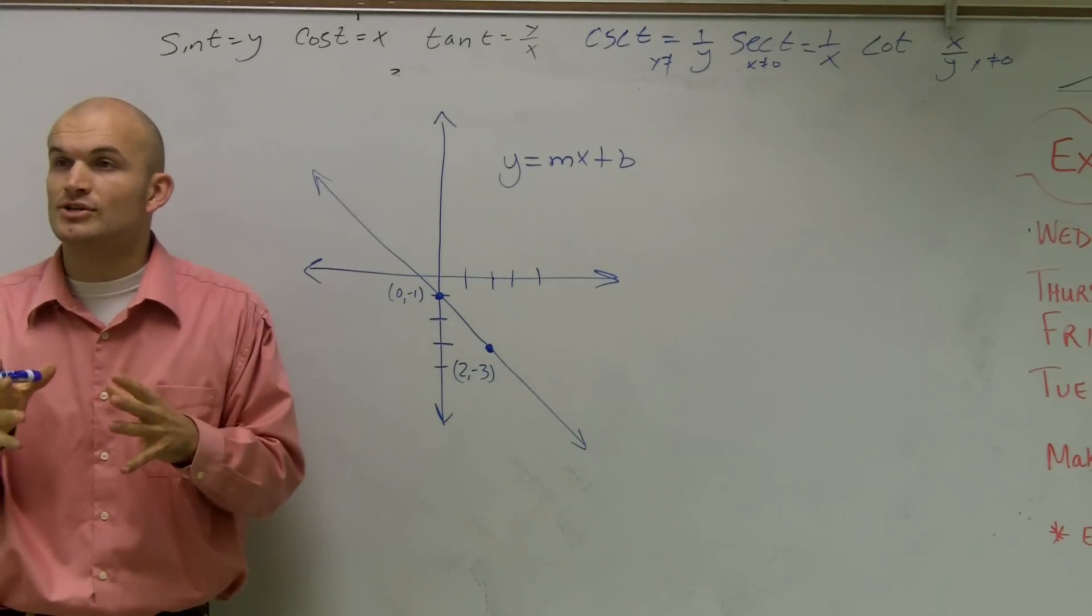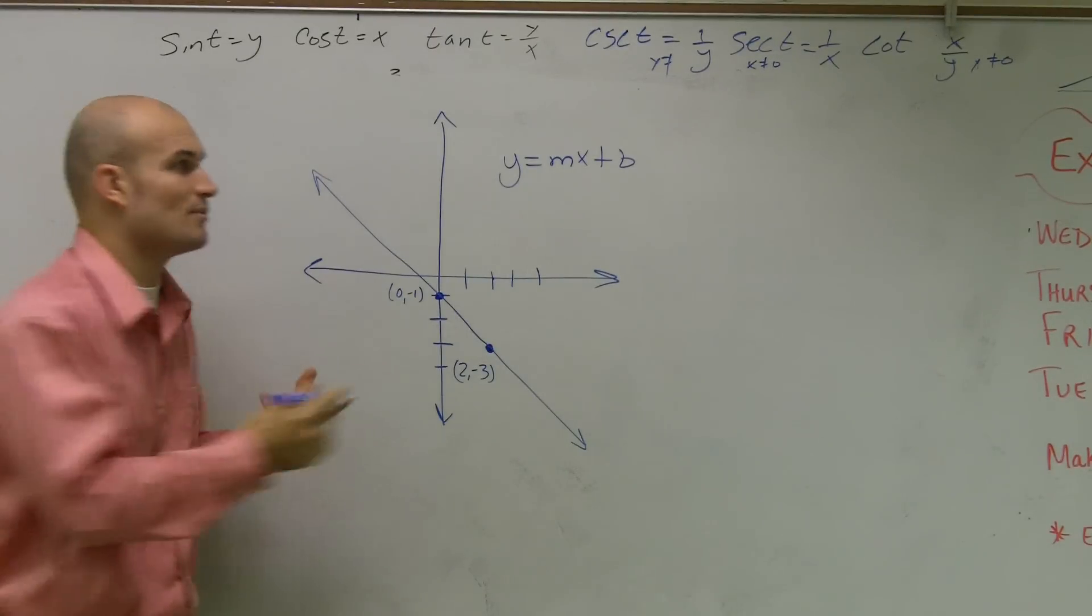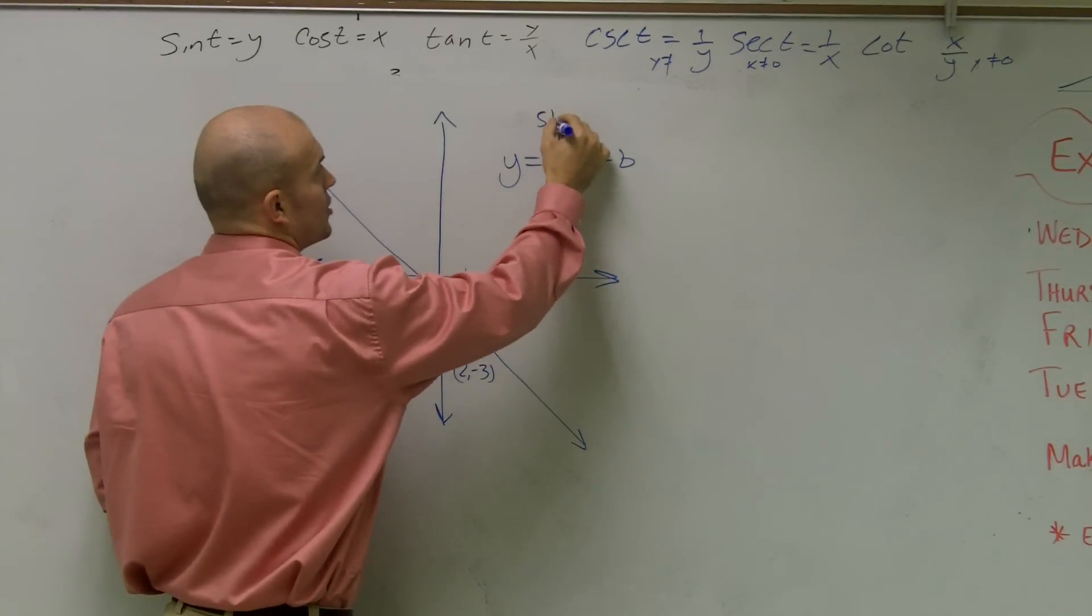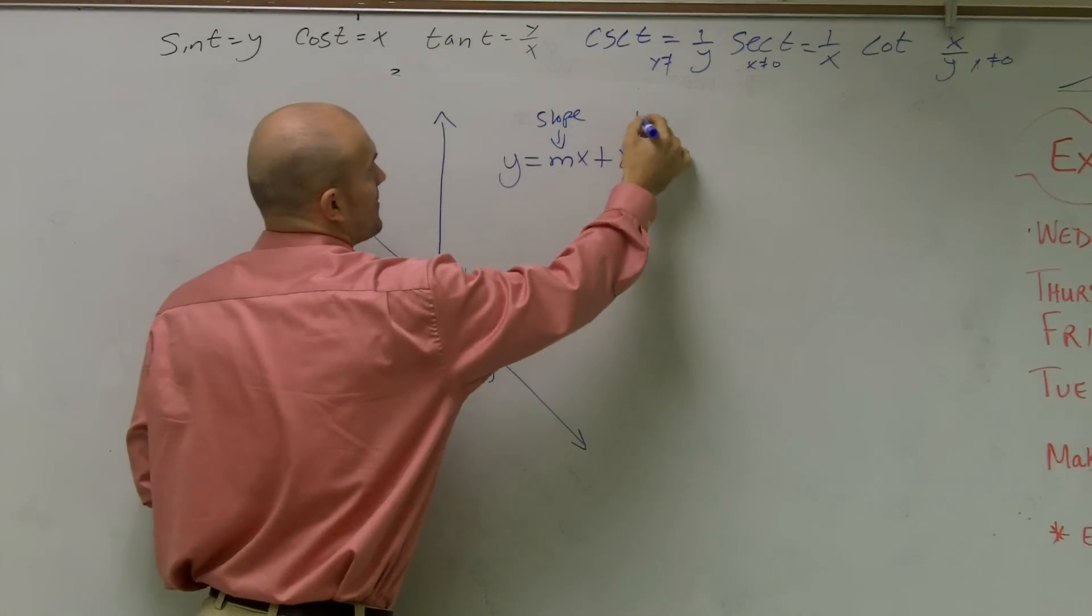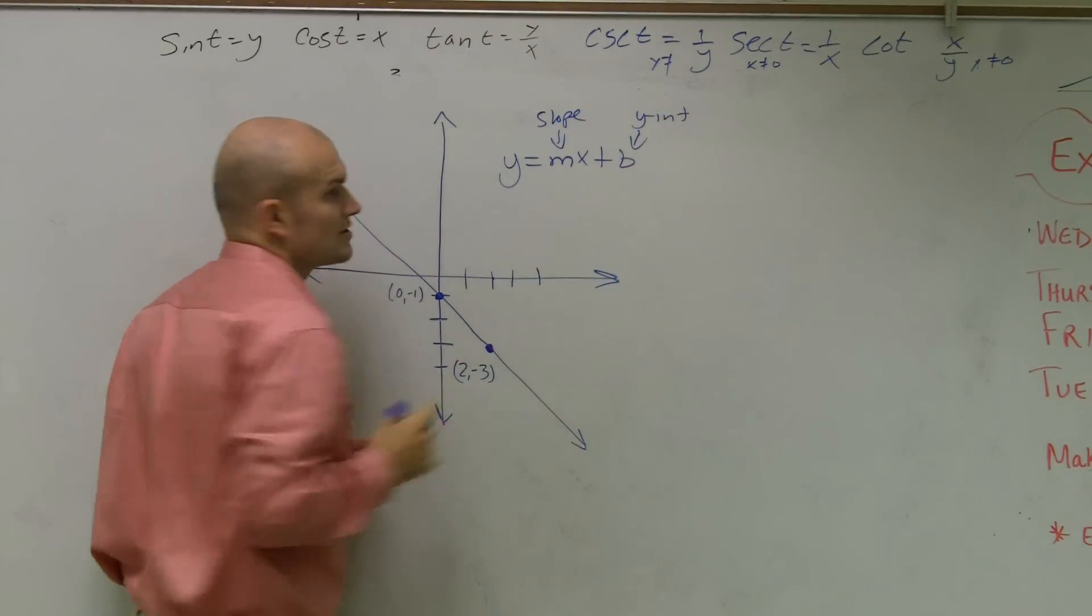To find this, what we want to do is determine, first of all, what does m represent? m represents our slope. b represents our y-intercept.